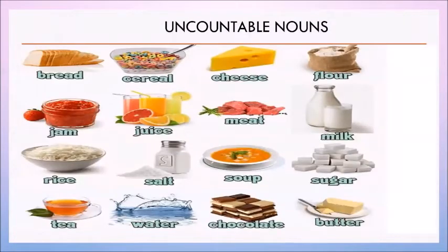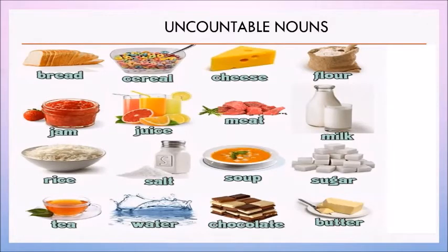Now look at this picture of uncountable nouns very carefully: flour, milk, sugar, butter, chocolate, soup, meat, juice, rice, water. All these things cannot be counted in terms of one, two, three. We have to make a guess or an estimation about the quantity of these nouns. So the nouns that cannot be counted easily are called uncountable nouns.